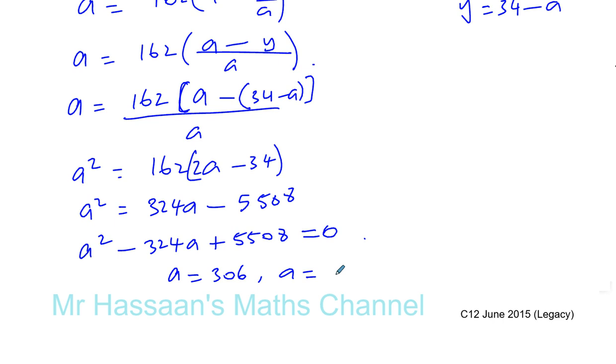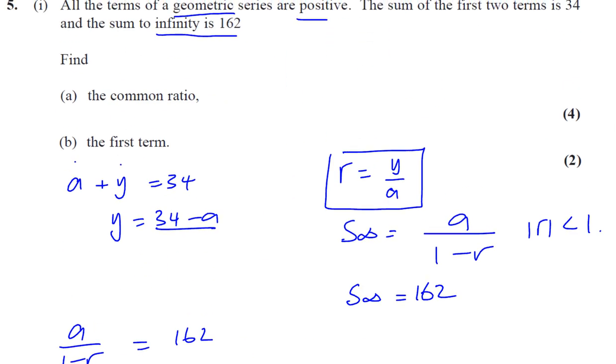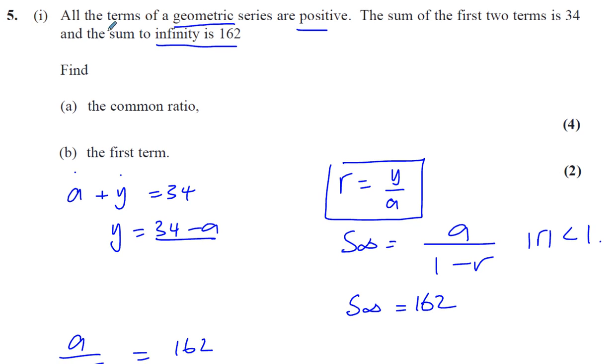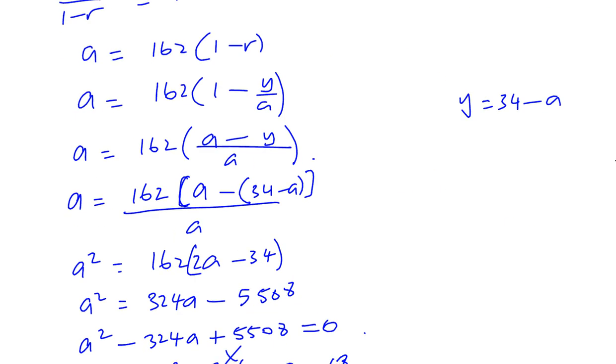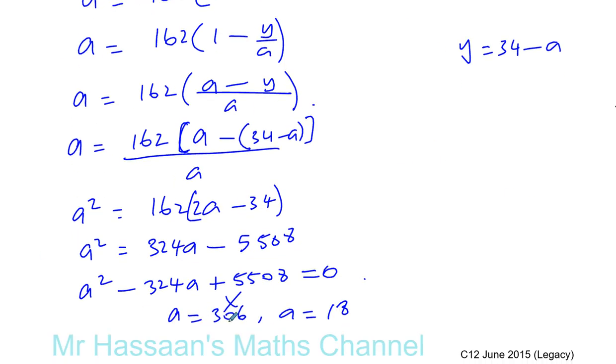Now, I know for sure this can't be the right answer because I know that when I add the first two terms, I get 34 and they're both positive. So all the terms are positive. So there's no way I can have the first two terms adding up to 34 and 306 is the first. It must be 18. So the first term is definitely 18.